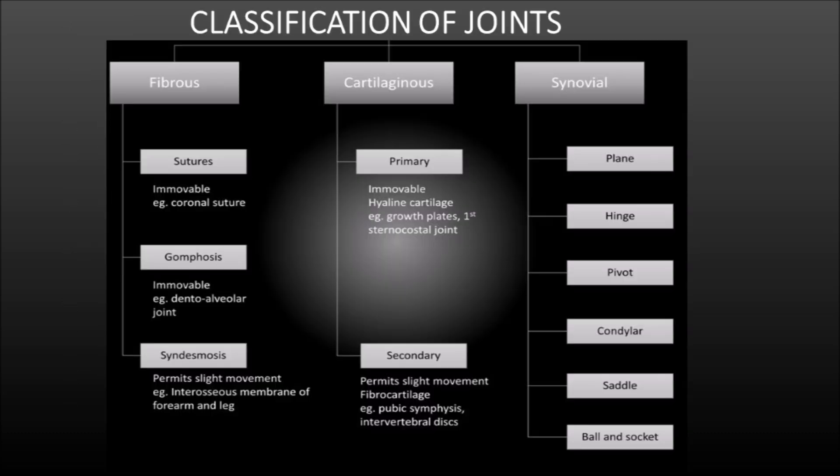Now let us move on to our last topic: classification of joints. Joints are classified into three: fibrous joint, cartilaginous joint, and synovial joint. Fibrous joint is further classified into three: sutures, gomphosis, and syndesmosis. Cartilaginous joint is bifurcated into two: primary cartilaginous joint, also called synchondrosis, and secondary cartilaginous joint, also called symphysis or amphiarthrosis.